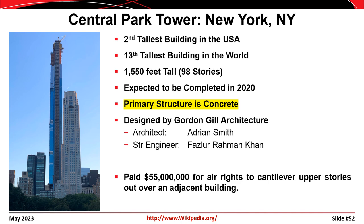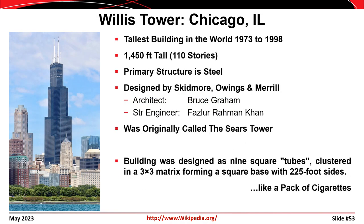An interesting fact about Central Park Tower: the owner paid $55 million in air rights so that part of the structure could be cantilevered out over an adjacent building — the lot was not large enough, so once the structure rose above the adjacent buildings, it was expanded outward. Lastly, the Willis Tower in Chicago — formerly the Sears Tower — was the tallest building in the world from 1973 to 1998, standing at 1,450 feet and primarily a steel building, also designed by Skidmore, Owings & Merrill.